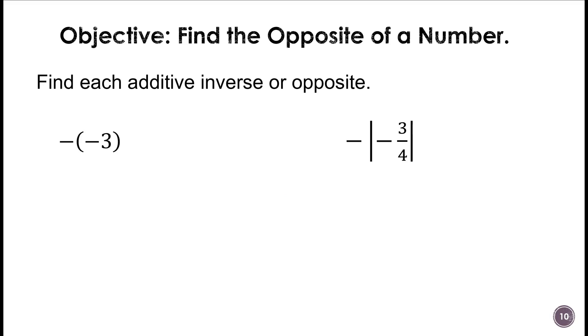We're doing the same thing here. We're finding the additive inverse or opposite, and this has a double negative, negative 3, or the opposite of negative 3 is the way I like to read that. So the opposite of negative 3 is 3, and that's because it has a double negative.